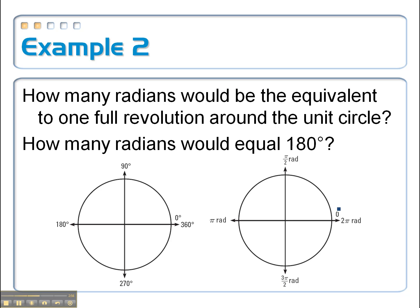So how many radians would be equivalent to one full revolution? One full revolution is 2 pi radians. How many radians would equal 180 degrees? That would be pi radians. So 180 degrees is the same thing as pi radians, and this is what we'll use as the conversion factor.